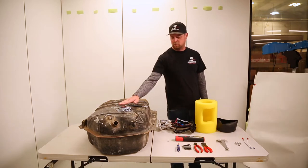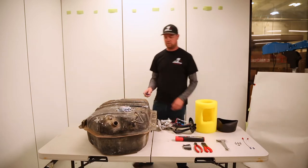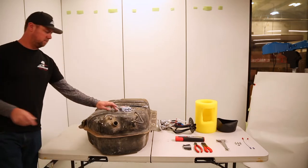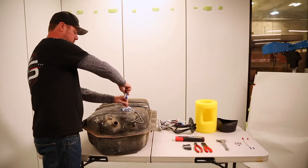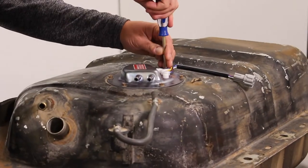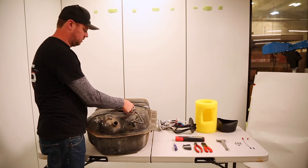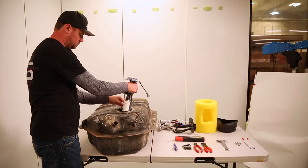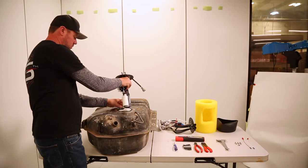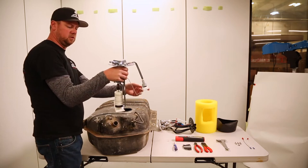First thing we're going to do is remove the factory sending unit and pump assembly from the tank. This is a factory Nissan Patrol tank. Take and remove the five screws with the Phillips screwdriver that retain this in the tank. Next, carefully pull out the factory sending unit. Be careful not to damage the float arm as you take it out because we will be reusing this.